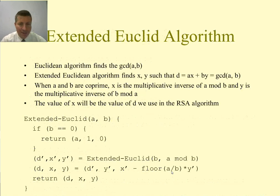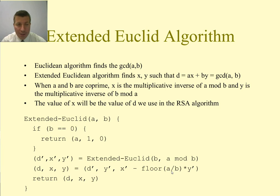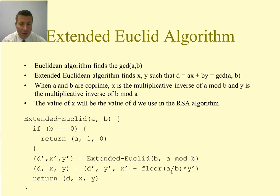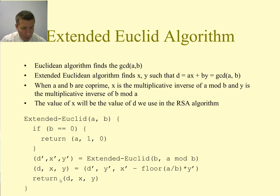We'll now go through an RSA example using the extended Euclidean algorithm. The standard Euclidean algorithm finds the GCD of a and b. The extended version finds x and y such that d = ax + by, which equals the GCD of a and b. When a and b are co-prime, x is the multiplicative inverse of a mod b. We'll use e as a and φ(pq) as b, and the returned x will be our value d.